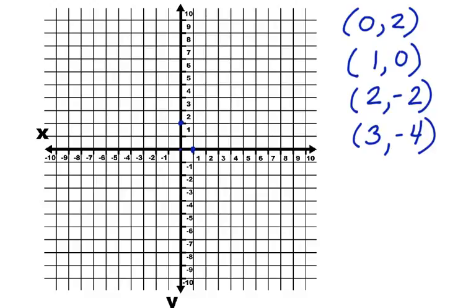2, negative 2, and we have 3, negative 4. Now we can connect these points. Here's the graph of the line. Now we can say that this graph represents the equation y equals negative 2x plus 2.